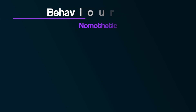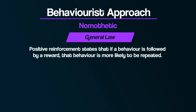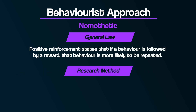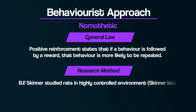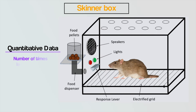To see the difference between ideographic and nomothetic approaches, consider the contrast between behaviourist and humanistic psychologists. Behaviourism is nomothetic, in that they produce general laws of behaviour that apply to everyone. For example, positive reinforcement in operant conditioning states that if a behaviour is followed by a reward, that behaviour is more likely to be repeated — a general law that applies to everyone. Behaviourist B.F. Skinner studied rats in the highly controlled Skinner box, allowing him to carefully manipulate variables and gather quantitative data such as the number of times the rat pressed the lever and the time taken.